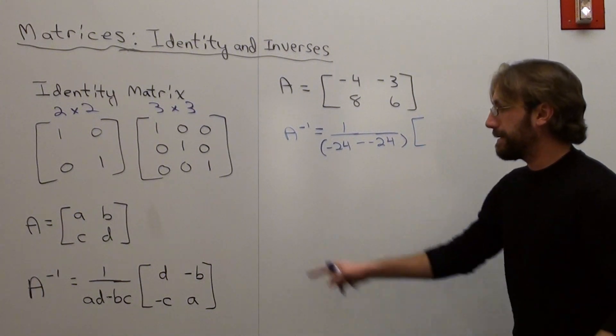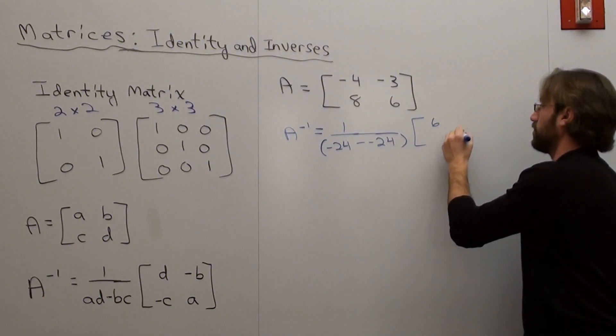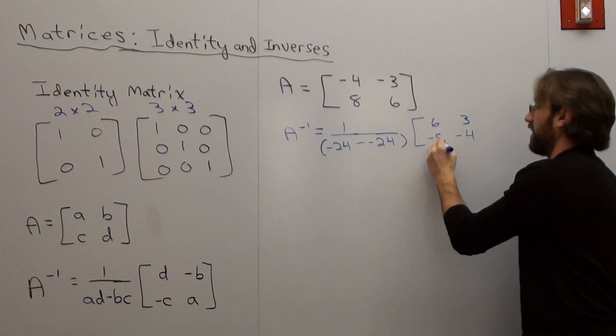I forgot what's going to happen. And you multiply it by, you switch the matrix, so it's 6 and negative 4. You switch the A and the D term, and then this becomes positive 3. And this becomes negative 8.